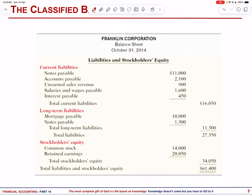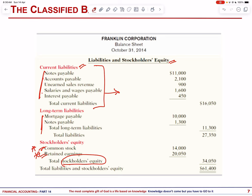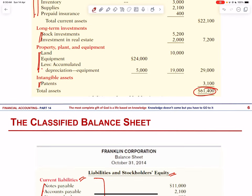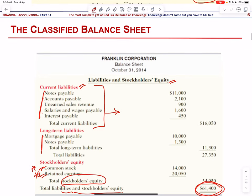The balance sheet also includes liabilities and stockholders' equity, comprising current liabilities and long-term liabilities. Current liabilities are for the current year; long-term is anything more than one year. In stockholders' equity, we record common stock and retained earnings. Adding these two together gives us stockholders' equity. The total of liabilities and stockholders' equity must equal the total of assets — if the two totals are not equal, there is a mistake.